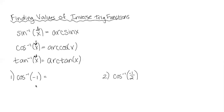Applying this to number one, I'm thinking: cosine of what angle gives me negative one? To get negative one, I look at the unit circle. Cosine is the x value, and the x value is negative one at angle pi. So cosine of pi is negative one, which means cosine inverse of negative one is pi.